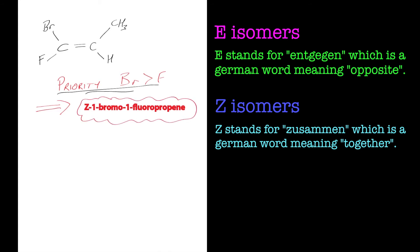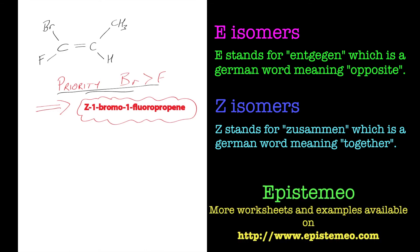I'll put a lot more examples and worksheets up on epistemio. If you care to have some practice with this kind of naming system. But really it all comes down to the Cahn-Ingold-Prelog type of nomenclature where we give priority to certain atoms and parts and molecules. So that's it for now. Bye for now.